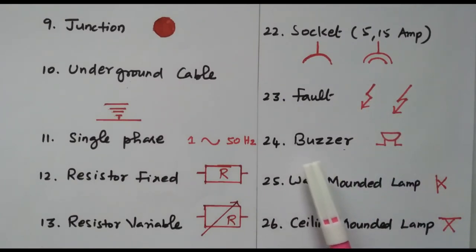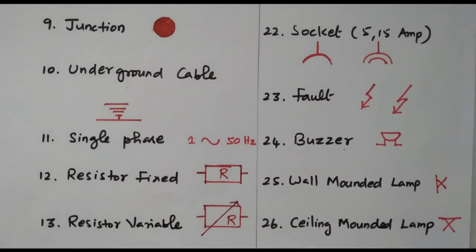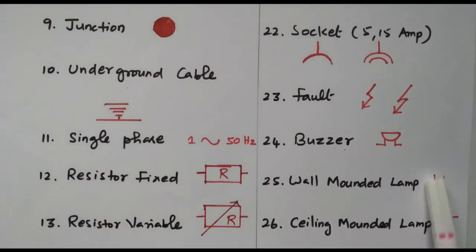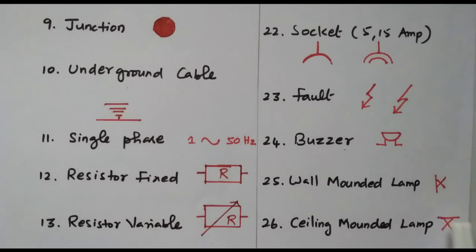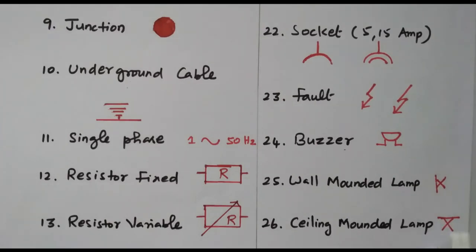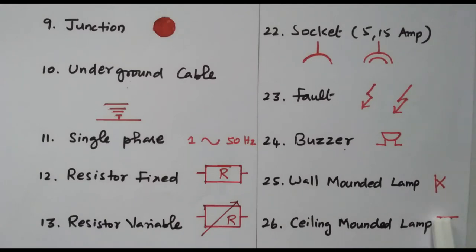The buzzer is represented by a semicircle below which lines are available. Then the wall mounted lamp uses a cross mark with a line on the left-hand side, indicating the wall over which the lamp is mounted. Then ceiling mounted uses the same cross mark but with the line on top, representing the ceiling over which the lamp is available.